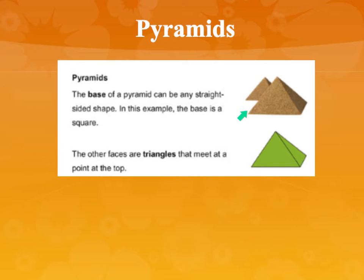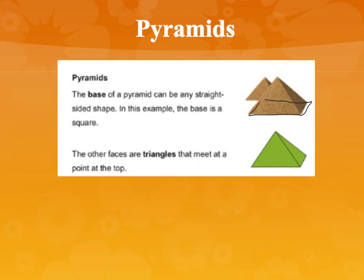Pyramids can have different kinds of bases. The base of a pyramid is the bottom piece that it sits on top of, and the base can be any straight-sided shape. In this example, the base is a square. If you imagine an imaginary line here, this would be the square base. Now the other faces are triangles that meet at a point on the top. So even though the base might be a square, all of the faces along the sides are triangles and they meet up at the top at a vertex.